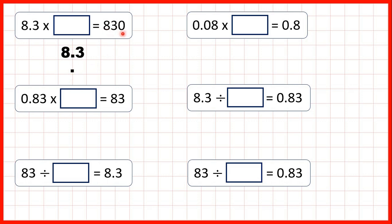Remember, if we have a whole number we really have an invisible decimal point on the end. So we can write 830 with a decimal point on the end. Then we can see easily what's happened to the digits. Here we can see that the 8 has moved two squares across, and so have the other digits. When we move the digits two squares to the left we've multiplied by 100, because 100 has two zeros, or because multiplying by 100 is like multiplying by 10 and then by 10 again.